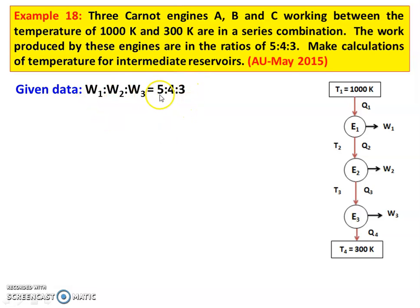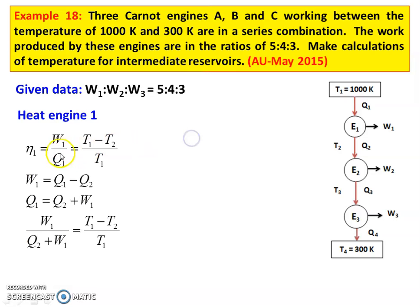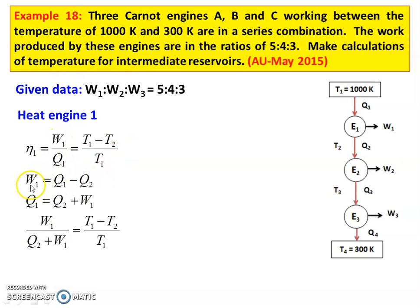That means W1 by W2 equal to 5 by 4, and W2 by W3 equal to 4 by 3. That is the ratio given. Now, for heat engine 1, Eta 1 — efficiency of engine 1 — equal to W1 by Q1. This is also equal to T1 minus T2 divided by T1. In the equation, net work done equal to net heat transfer.